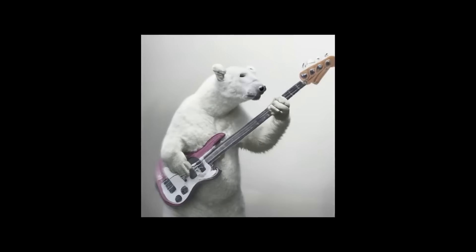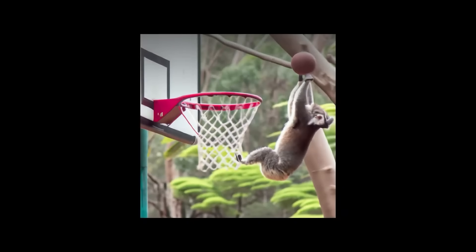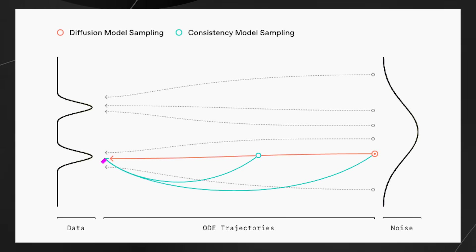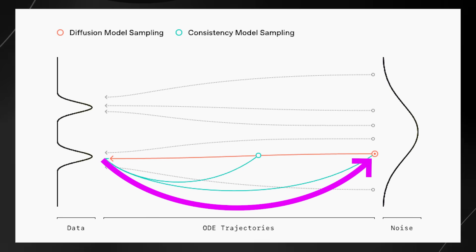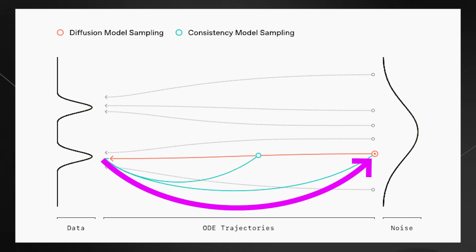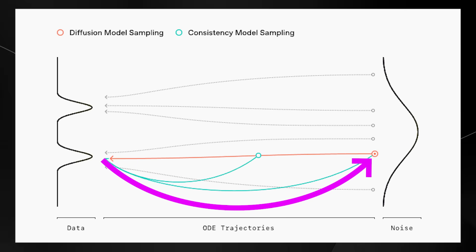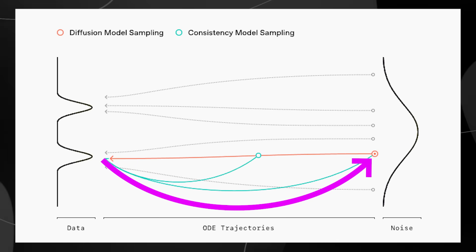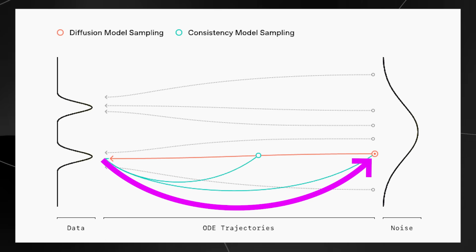How does SCM actually work? Instead of the traditional method where the model starts with random noise and iteratively removes it — like unscrambling a jumbled puzzle one piece at a time — the new method, SCM, takes a shortcut, jumping directly from noise to the final image. This is akin to having a blueprint of the complete puzzle and assembling it very quickly.